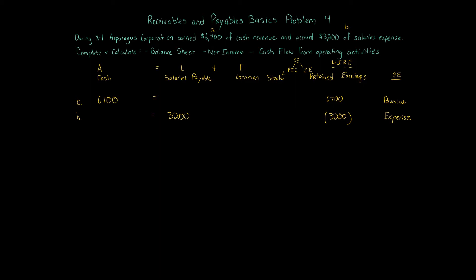Our ending balance in cash, $6,700. Ending balance in salaries payable, $3,200. Ending balance in common stock is zero. Now, of course, we're just focusing on two transactions. This is a corporation. It's going to have a balance in common stock. And finally, the balance in retained earnings is going to be $3,500. So now, set it up using our horizontal approach. Makes things a lot easier. Now we can do a balance sheet. We can do the net income calculation, and we can do the cash flow from operating activities.